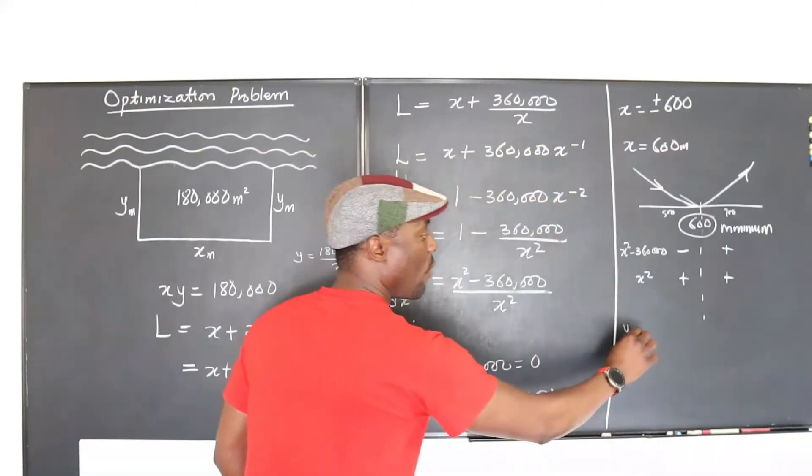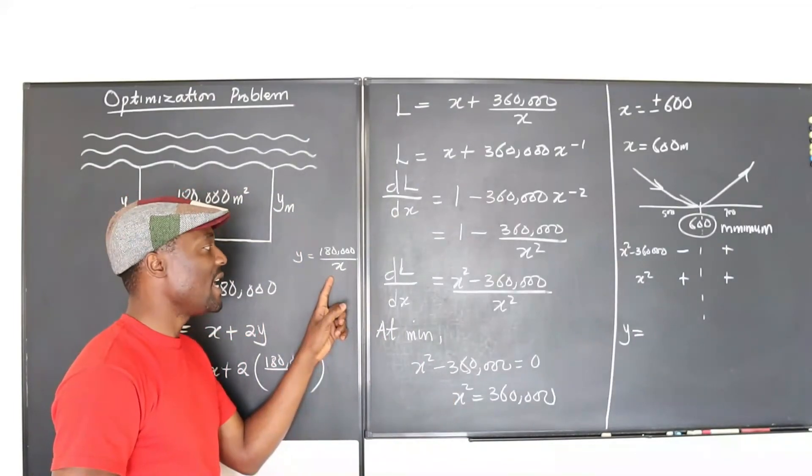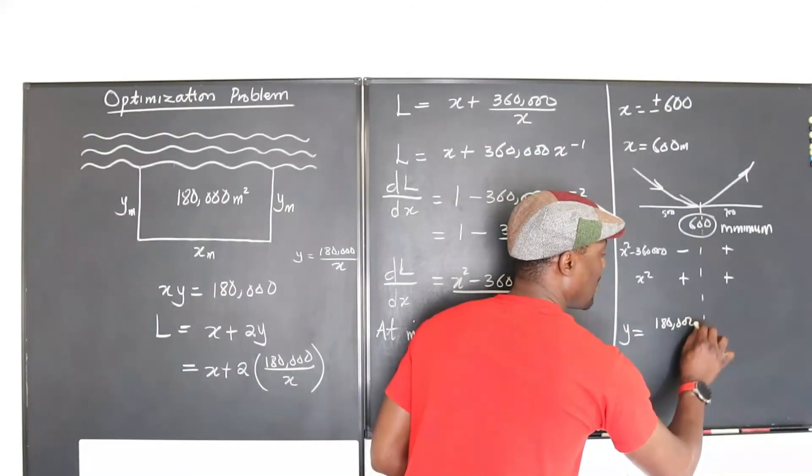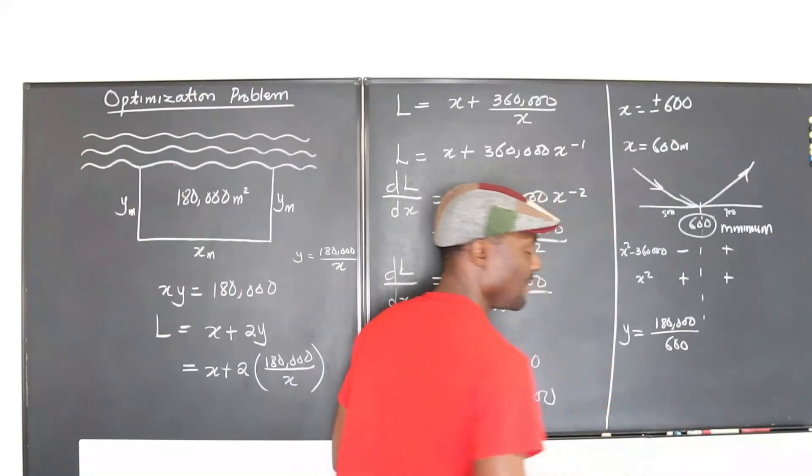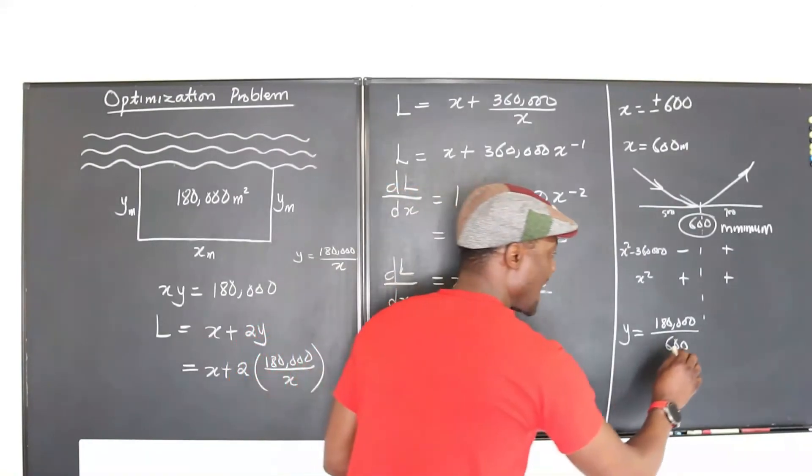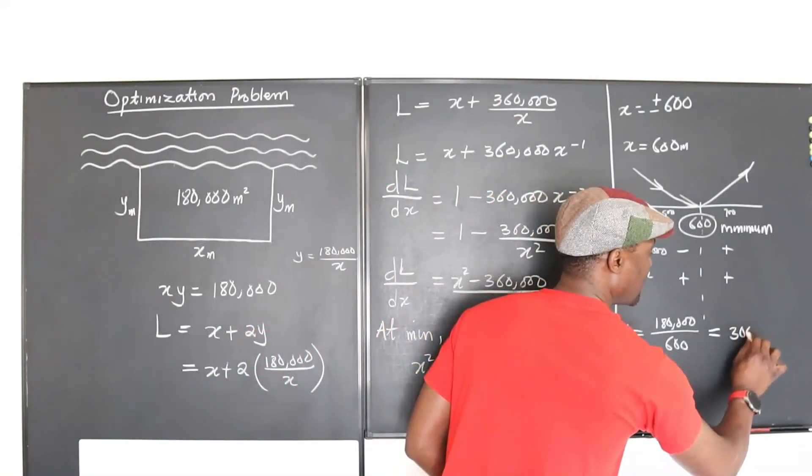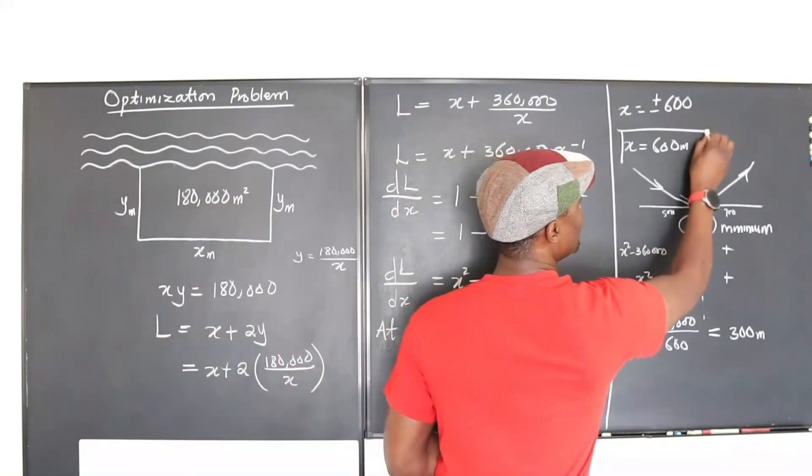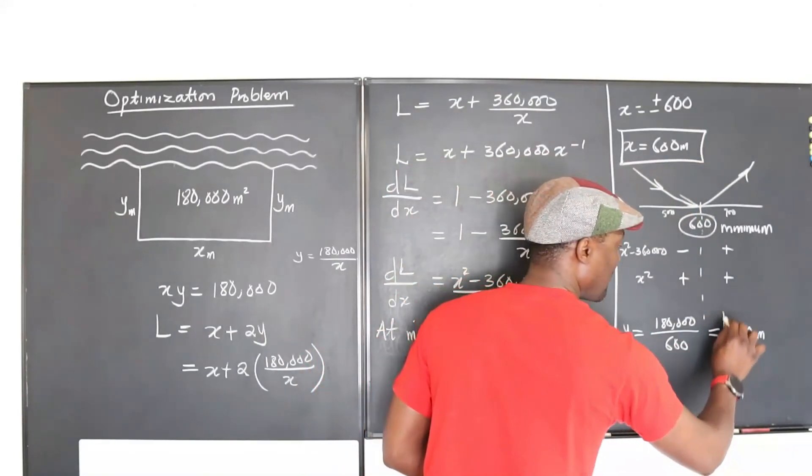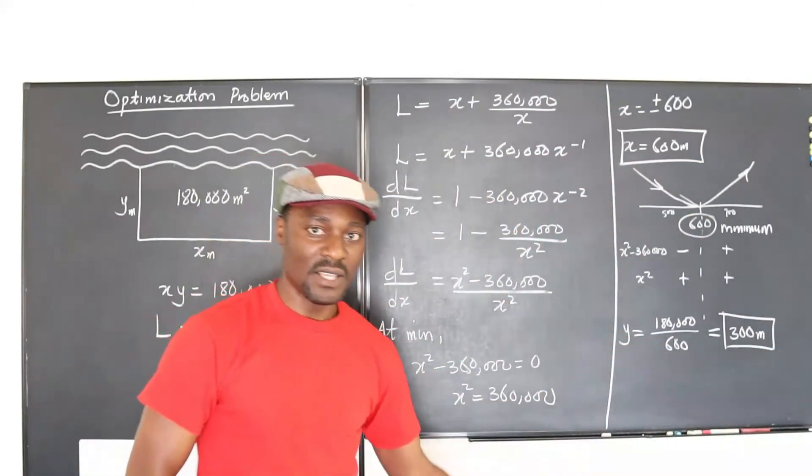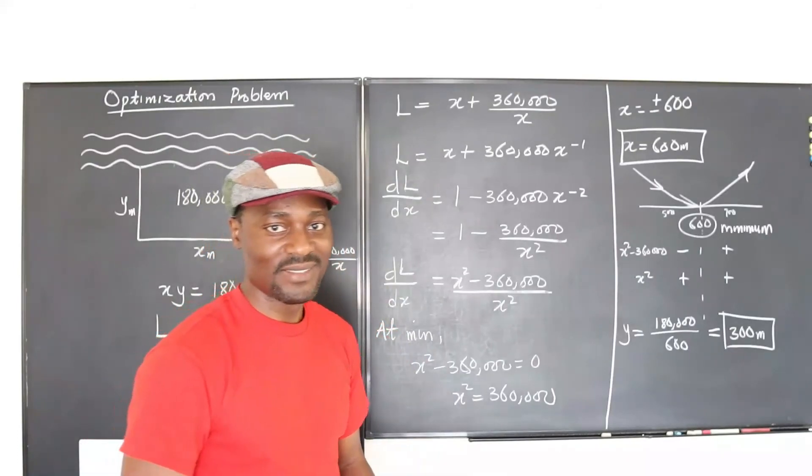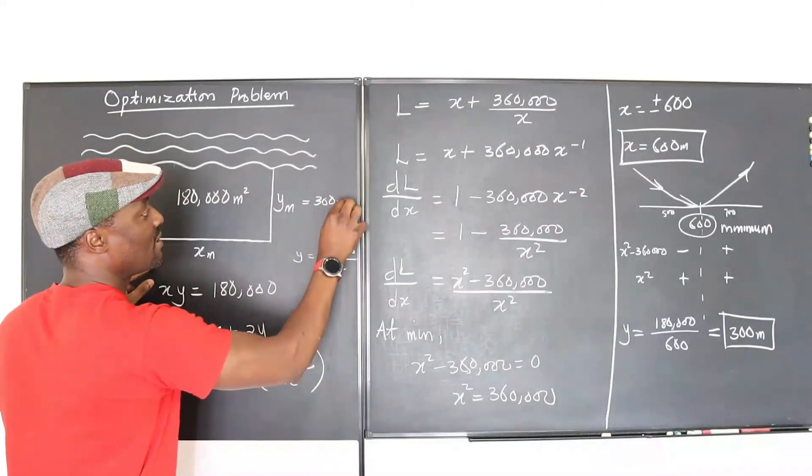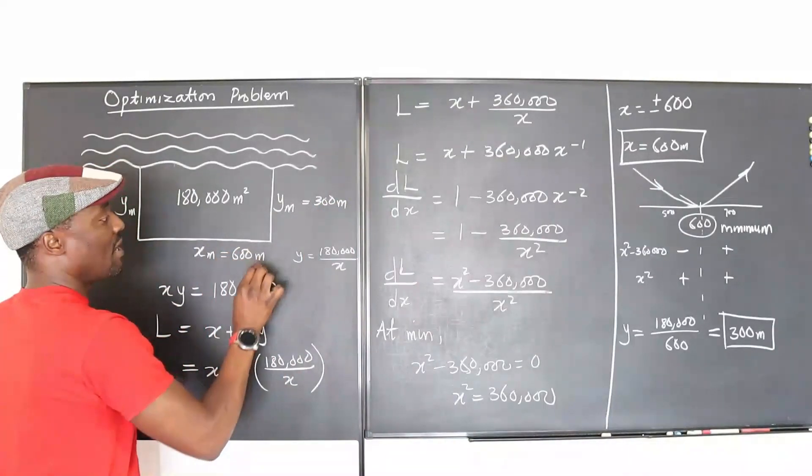What will y be? We've written here at the beginning that y is 180,000 divided by x. So that's 180,000 divided by 600. That definitely is 300 meters. So clearly we have two answers. It's going to be a rectangle of dimensions 600 by 300. So we come here and say this is equal to 300 meters, and this is equal to 600 meters.